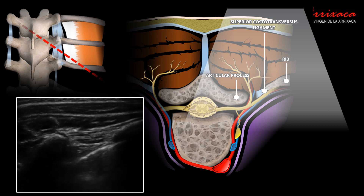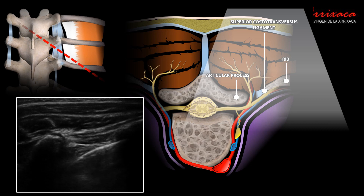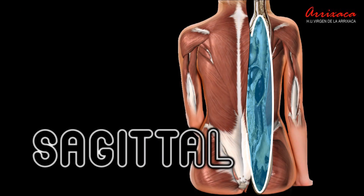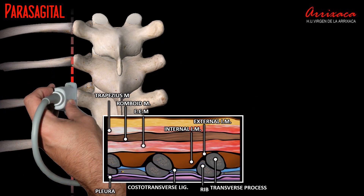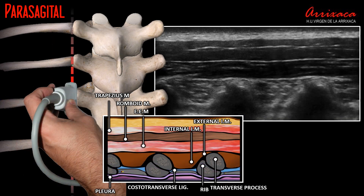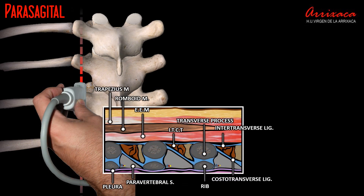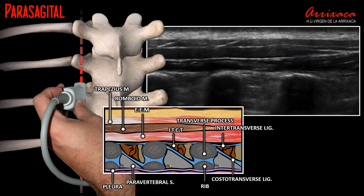This image allows us to clearly identify the paravertebral space. Changing to a paramedian sagittal plane and placing our transducer on the costal plane, we will observe consecutive rounded images with posterior acoustic shadowing and a sliding hyperechoic line corresponding to the pleura. As we move medially, the rounded images will transform into irregular images shaped like camel humps, corresponding to the costotransverse joints. Our target is found as rectangular images with posterior acoustic shadowing where the pleura hides in deeper planes. In thin patients, the internal intercostal membrane delimiting the paravertebral space can be identified.